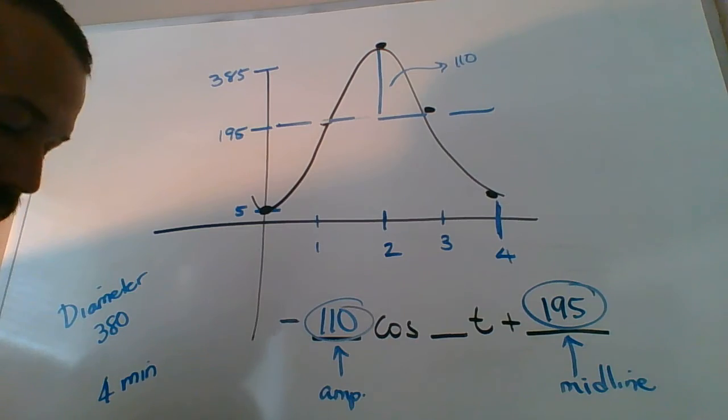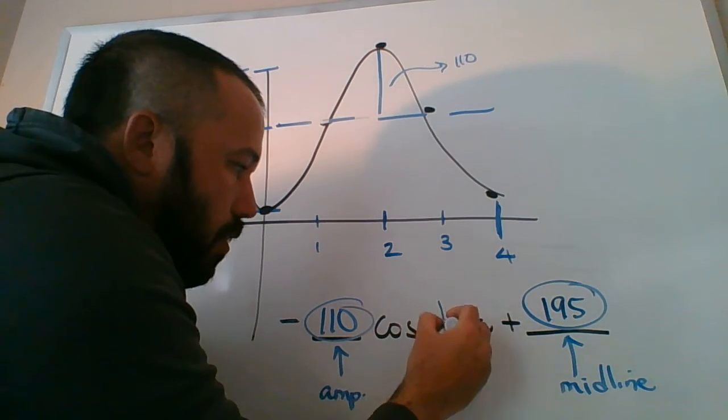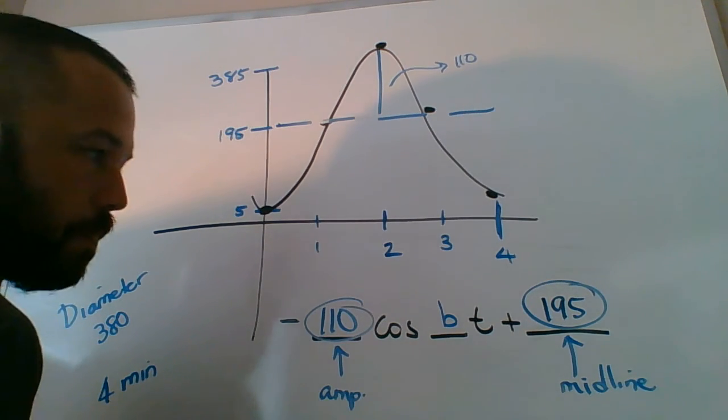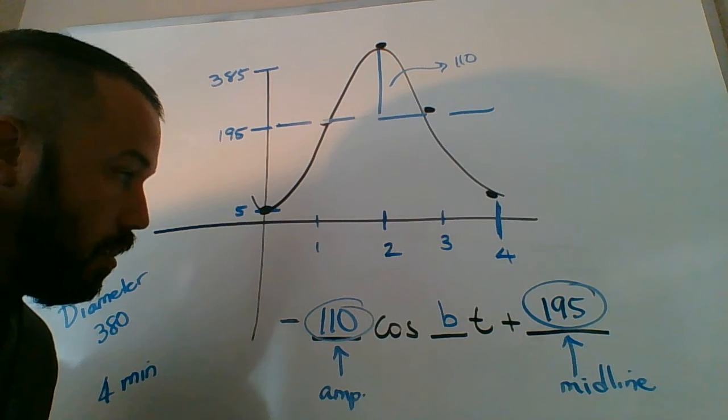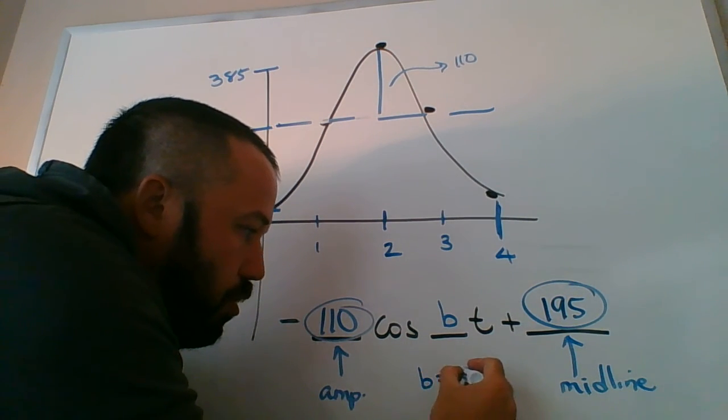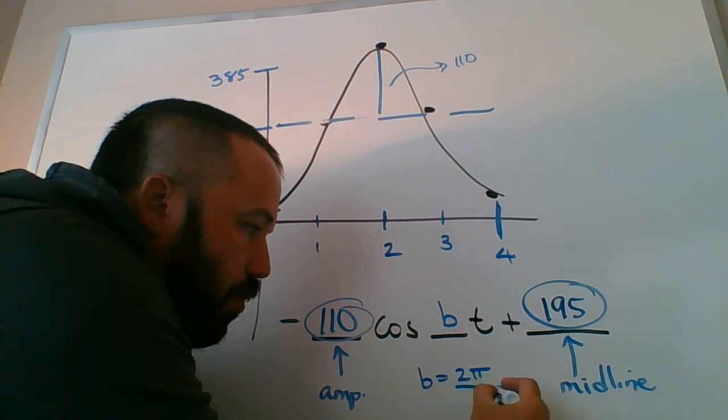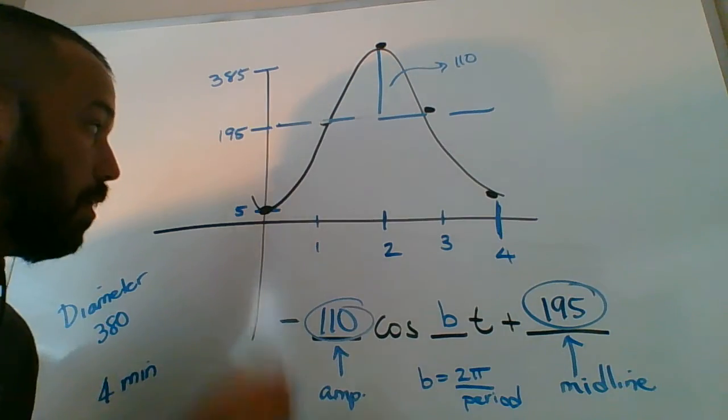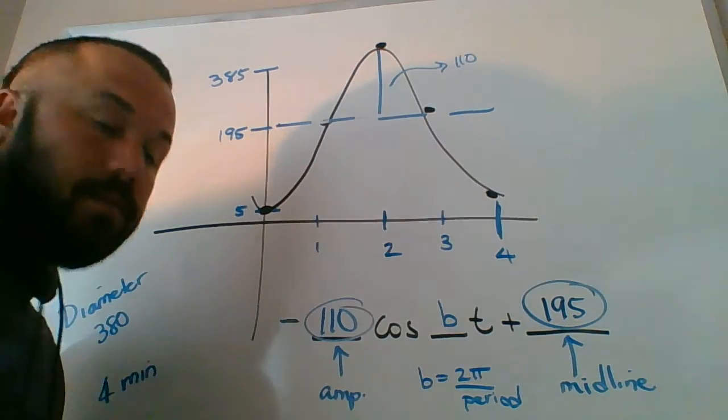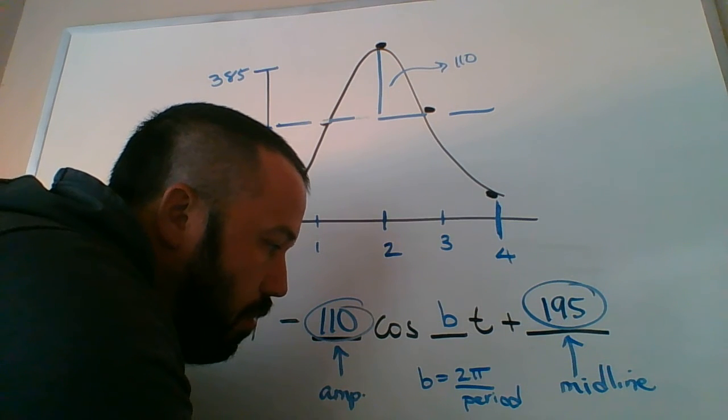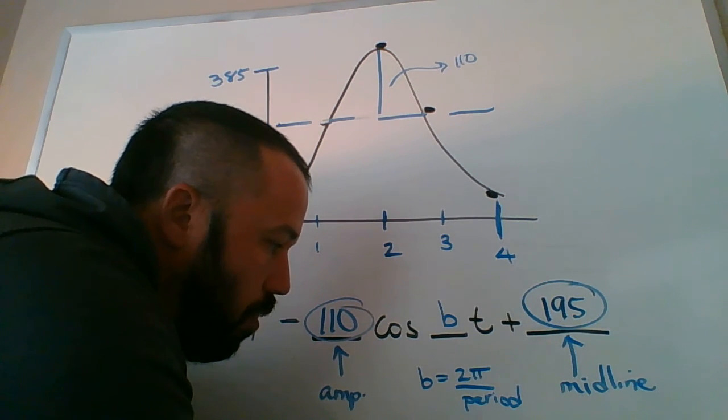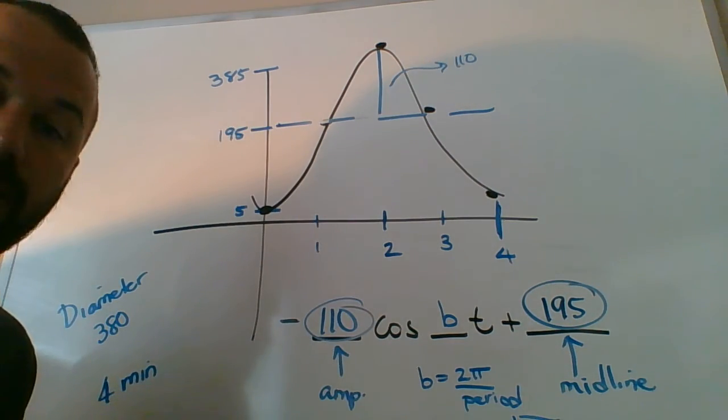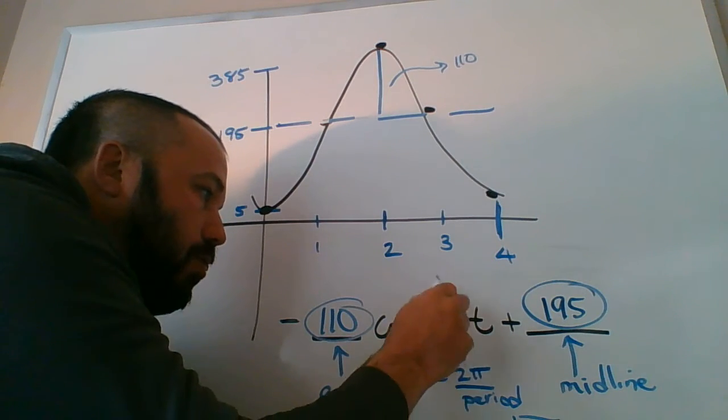Now the last piece is the B value, and this always comes before the x, or in this case it's a story problem, so instead of x they have it as t for time. You have to use the period to find this. The B value is always 2π over the period, and that's how long it takes a graph to go through one cycle. From bottom to bottom it takes four minutes, so this thing's going to be 2π over 4, or π over 2. That's the thing that goes in for B, so this would be π/2 in front of here.